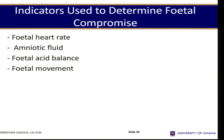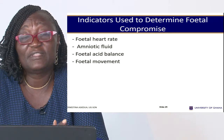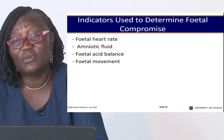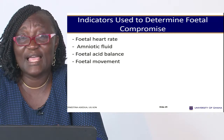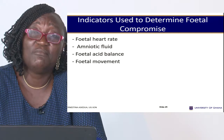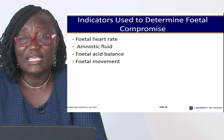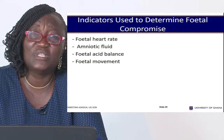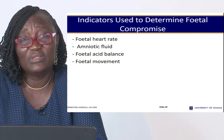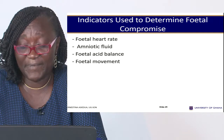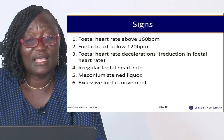The indicators used to determine fetal compromise are: fetal heart rate, amniotic fluid measurement, colour of the amniotic fluid, fetal acid-base balance, and fetal movement. It is important to know the normal ranges and colours for all these indicators so that you can determine fetal distress immediately it happens and intervene appropriately.